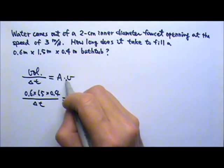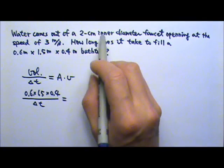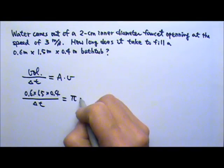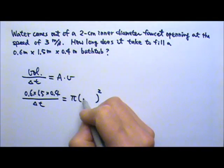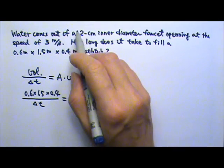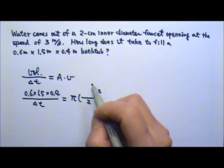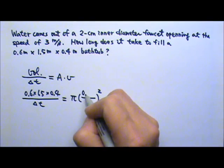The cross sectional area of the faucet is pi r squared, and the r is the diameter divided by 2. Now I have to change it to 0.02m because on this side all the length is in meters.